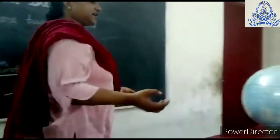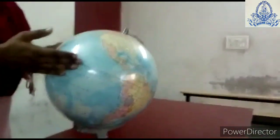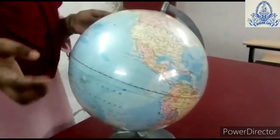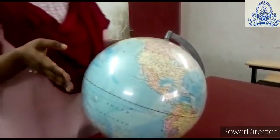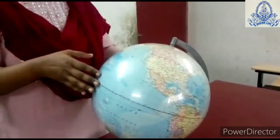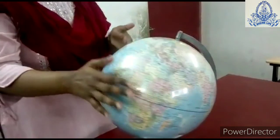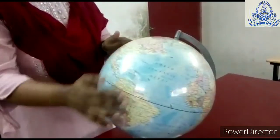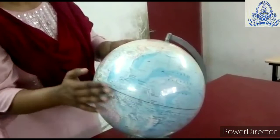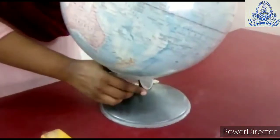Now we can study with the help of this globe. As you know, a globe is a model of the Earth. Rotation means rotating on its axis — this is called rotation, and this is the axis on which the globe rotates. This axis is imaginary; we can't see it.